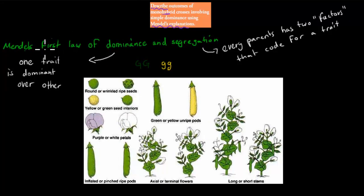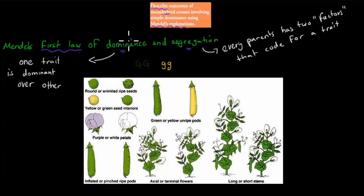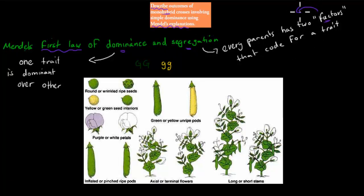We go over Mendel's explanations first. This was Mendel's first law of dominance - his explanation has two parts: dominance and segregation. I'll cover the segregation part first. This part of his law says that every parent has two factors that code for a trait, and nowadays we refer to those factors as genes. So for every trait there are two genes that code for it.